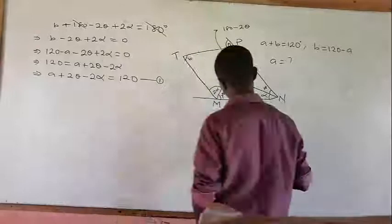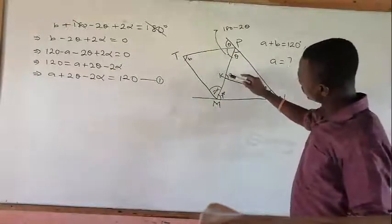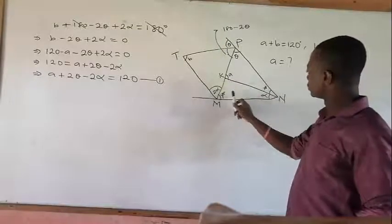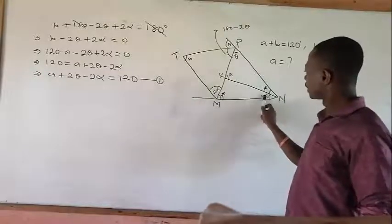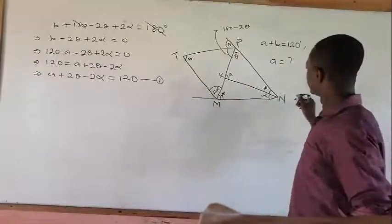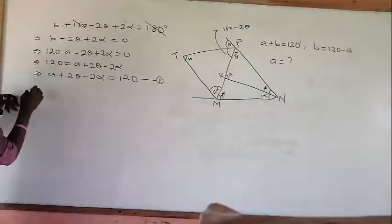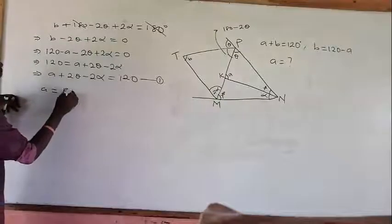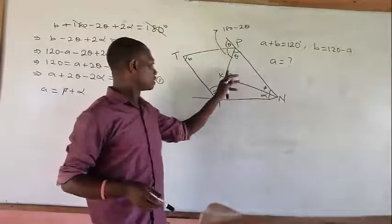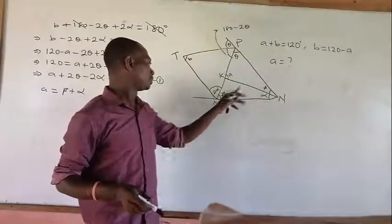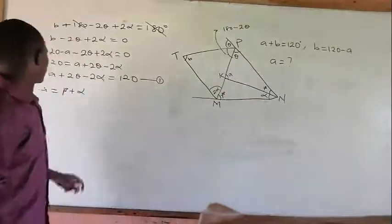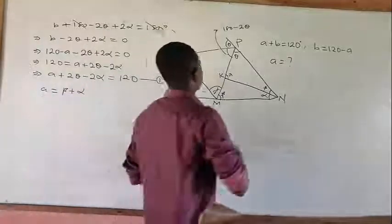Now for the next equation — this one is an exterior angle, and this one is an opposite angle. An exterior angle equals the sum of the opposite interior angles. So beta plus alpha equals A. So A equals beta plus alpha. This one is an exterior angle equal to the sum of opposite angles.